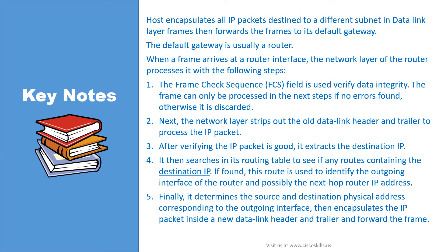Let's sum up our video with the key notes. A host encapsulates all IP packets destined to a different subnet in data link layer frames, then forwards the frames to its default gateway. The default gateway is usually a router. When a frame arrives at a router interface, the network layer of the router processes it with the following steps. First, the frame check sequence field is used to verify data integrity. The frame can only be processed in the next steps if no errors are found; otherwise, it is discarded.